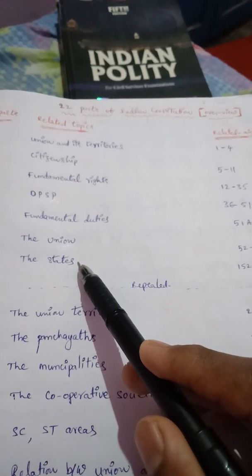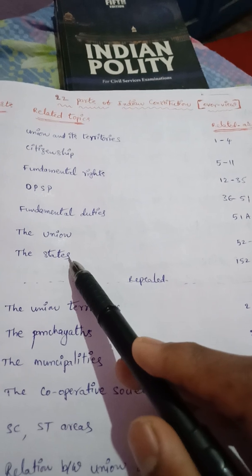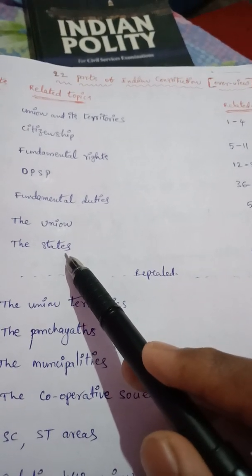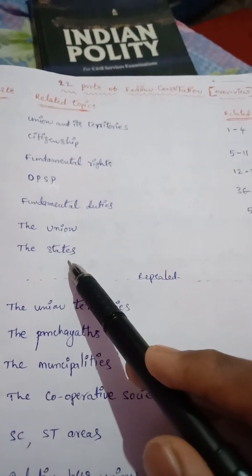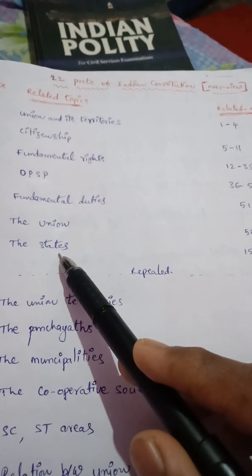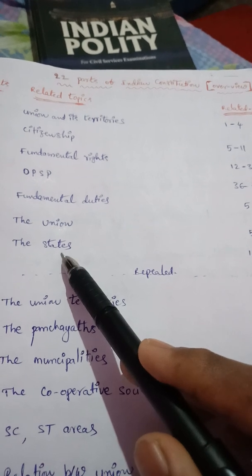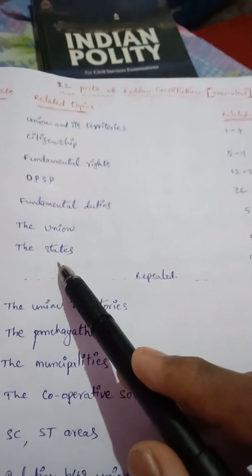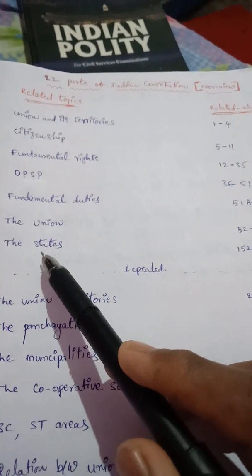The Governor's right to address either the Assembly or the Legislative Council. Next, prorogue and dissolution of sessions — the Governor can prorogue and dissolve any session. Next, Speaker and Deputy Speaker, as well as Chairman and Vice Chairman — their powers, vacation of seats, and disqualification of members.